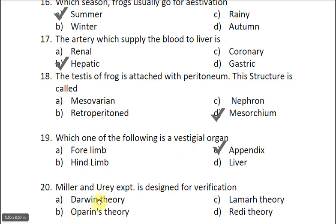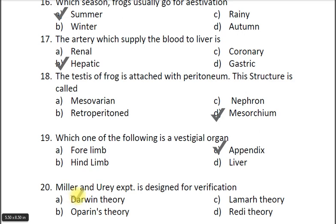Question twenty: Miller and Urey's experiment was designed for verification of — A Darwin's theory, B abiogenesis theory, C Lamarck's theory, D steady state theory. The correct answer is B abiogenesis theory, according to which organic compounds like amino acids, fatty acids and sugars can be produced from inorganic compounds present in the atmosphere of the prebiotic earth.